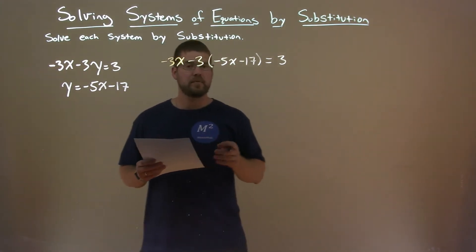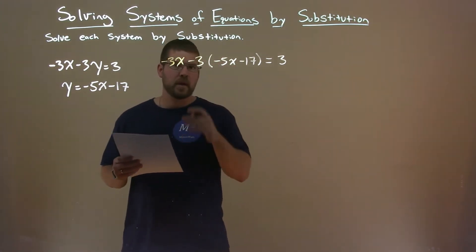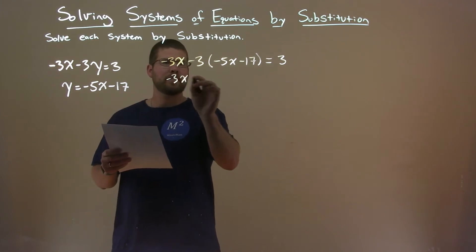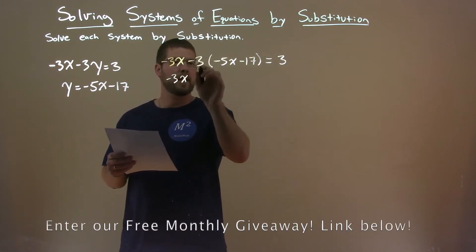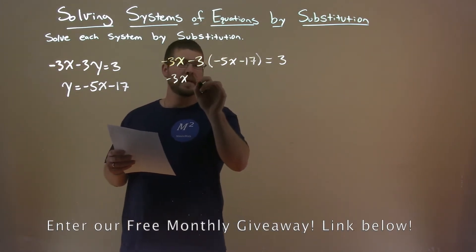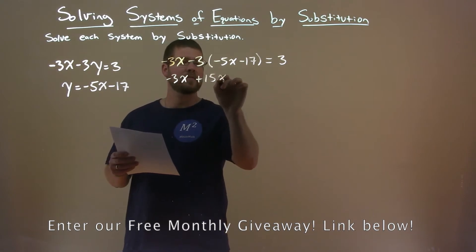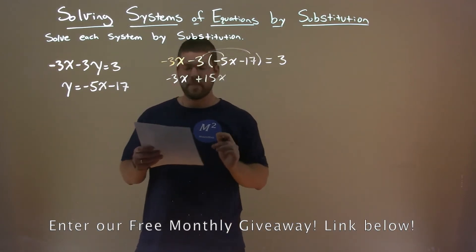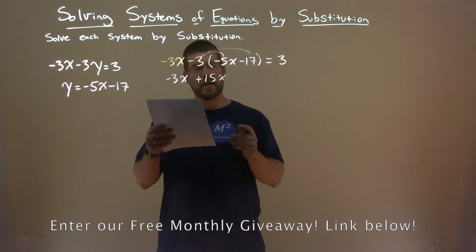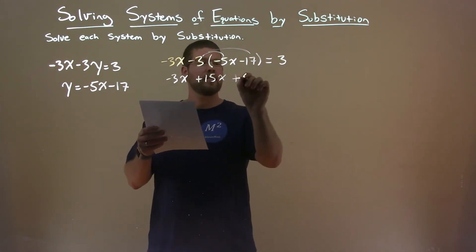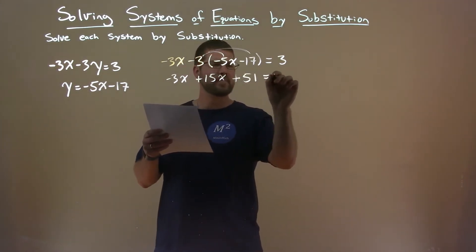From here now, we're going to simplify and solve for x. We have minus 3x here, and then distribute the minus 3. Minus 3 times a minus 5x is a positive 15x. Distribute again, and minus 3 times a minus 17 is a positive 51. And that equals 3.